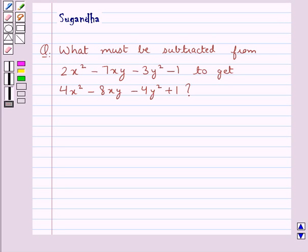Hello and welcome to the session. In this session we discuss the following question: What must be subtracted from 2x² - 7xy - 3y² - 1 to get 4x² - 8xy - 4y² + 1?